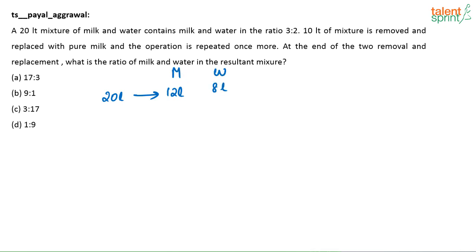8 liters is water. Now, 10 liters of the mixture is removed and replaced with pure milk. In 10 liters, how much milk and water will be there? In 20 liters, 12 liters is milk and 8 liters is water. From this mixture, 10 liters is being removed, so milk and water will be in the ratio 3:2 — that is 3/5 of 10 liters, which gives 6 liters of milk and 4 liters of water.